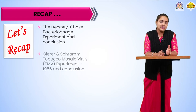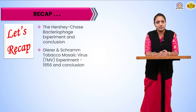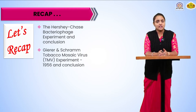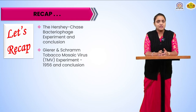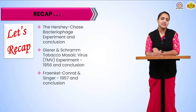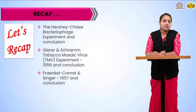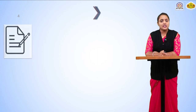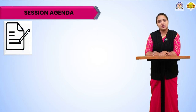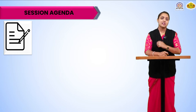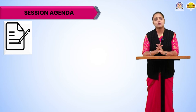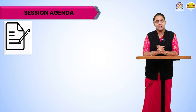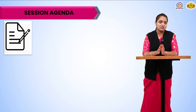In recap, we have seen the Hershey-Chase bacteriophage experiment in which E. coli were taken. We have seen the Gurren-Carmen tobacco mosaic virus experiment which shows that RNA is the genetic material in TMV, and the Conherent-Singer experiment which was also on the TMV virus. In our previous session we have seen the discoveries, the Mendel findings, the discoveries of DNA, and how it was proven that DNA is a genetic material.